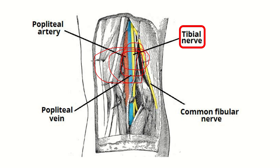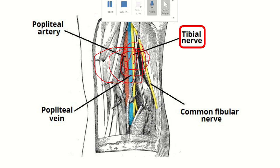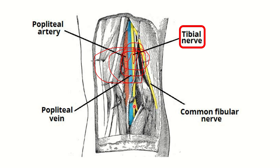In this central region there is the tibial nerve, and the tibial nerve lies most superficially. Then we can see the popliteal vein, and then the popliteal artery. So in the popliteal fossa the order from most superficial is: tibial nerve, then popliteal vein, then popliteal artery.